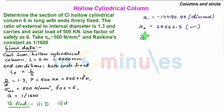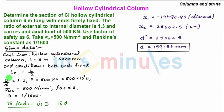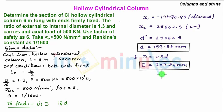Since d square is positive, we take d square equal to 25562.5. Taking the square root, we get the internal diameter of the hollow cast iron cylindrical column as 159.88 mm. Using D equal to 1.3 times small d, we get the external diameter of the hollow cast iron cylindrical column as 207.84 mm. So this is the answer.